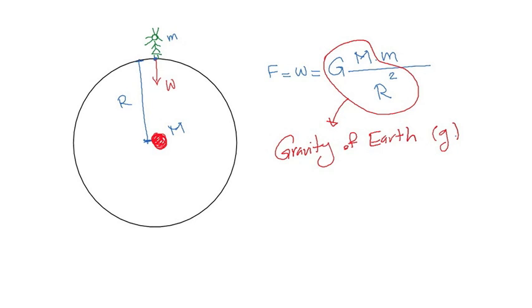Gravity of Earth refers to the acceleration that the Earth imparts to objects near its surface. It has an approximate value of 9.81 m per second squared, which means that the speed of an object falling freely near the Earth's surface will increase by about 9.81 m per second every second.